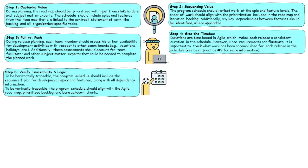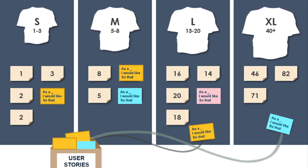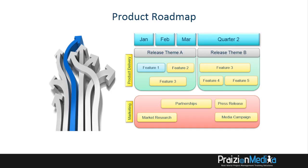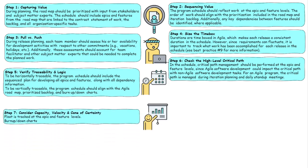Number five: verify traceability and logic. To be horizontally traceable in the world of Agile, you want to trace at the higher levels — does it make sense seeing how the features are sequenced, how the releases are sequenced? To be vertically traceable, the program schedule should align with the Agile roadmap, prioritized backlog, and burn-up or burn-downs. Number six: check the high-level critical path. The critical path at a much higher level — in the product roadmap, we have those bars like we do in Gantt charts, but at a much higher level. For an Agile program, the critical path is managed during iteration planning and daily stand-up meetings. We do not use the functionality as we would in MS Project. Number seven: consider capacity, velocity, and the cone of uncertainty.